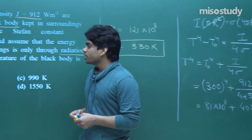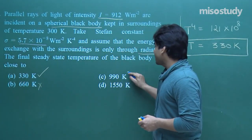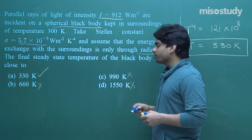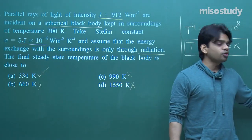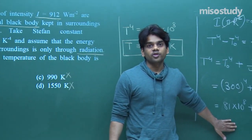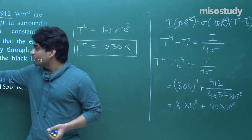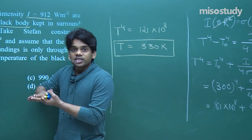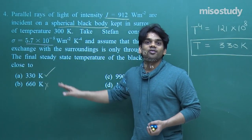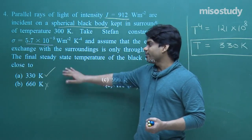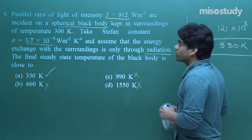Checking the options: A) 330 K — that is the right answer. B) 660 K, C) 990 K, D) 1550 K are incorrect. In a JEE examination, you reach an approximate result from the equation. The options differ by large amounts, so you can identify which option is closest to your calculated answer and tick accordingly. 330 K is the correct answer.